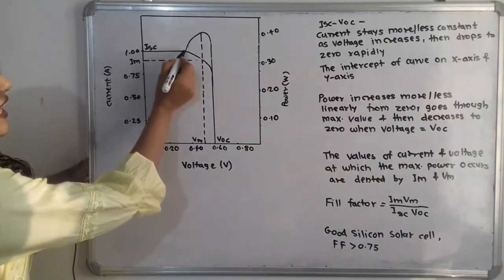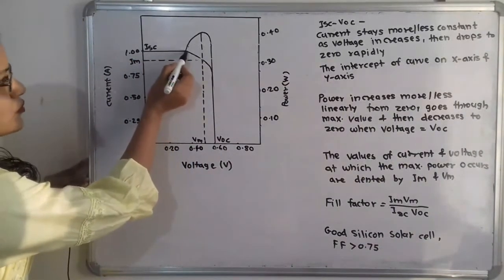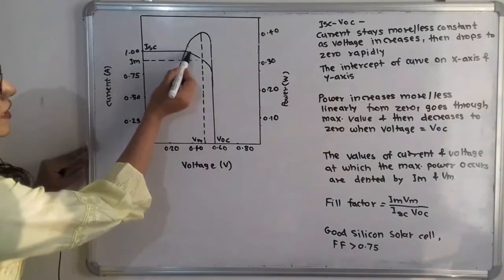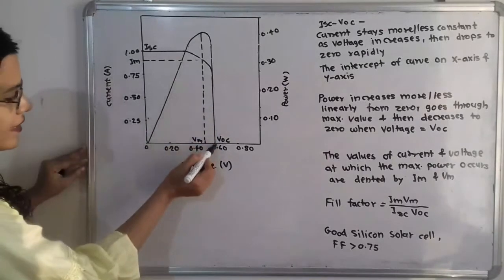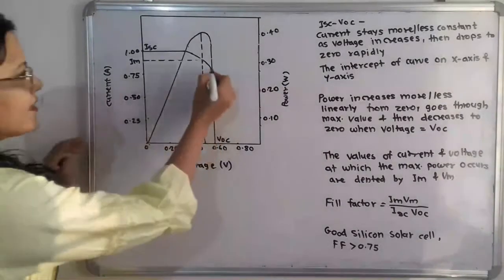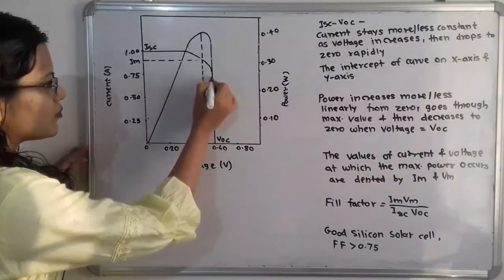So if we observe from this point, it drops to zero rapidly, and here at 0.60 volt it becomes zero. So at this point it drops rapidly.